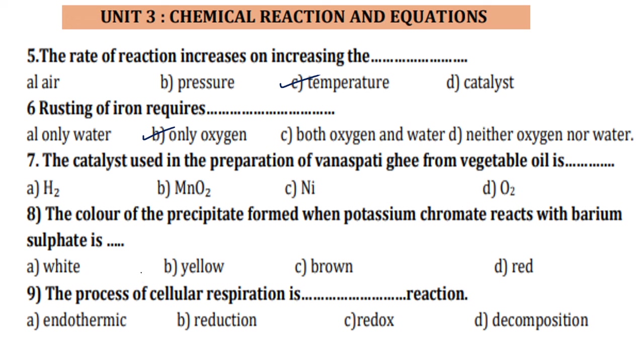The catalyst used in the preparation of vanaspati ghee from vegetable oil, it is nickel is the catalyst used. This is all information type of questions, it is only knowledge type of question, not any kind of application is here. The color of the precipitate formed when potassium chromate reacts with barium sulfate, there is a preparation of barium chromate. And barium chromate is with yellow color and therefore the precipitate formed is of yellow color. The process of cellular respiration is also called as redox reaction because reduction and oxidation both the process are done at the same time.